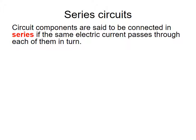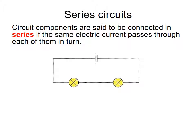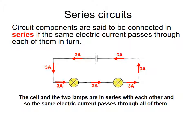There are two types of circuits: series and parallel. Circuit components are connected in series if the same electrical current passes through each of them in turn. Here we have a cell connected to two light bulbs in series. As current flows through, it stays the same throughout — the supply current equals the current at bulb one and the current at bulb two.